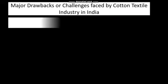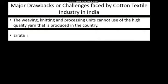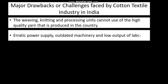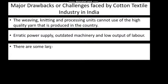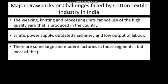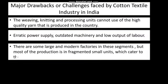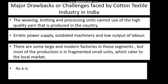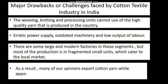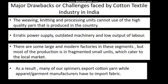In India, the weaving, knitting and processing units cannot use the high quality yarn that is produced in the country because most of this yarn is exported to foreign countries. Erratic power supply and outdated machinery lead to low labour output. There are some large and modern factories, but most production is in fragmented small units catering to local markets. As a result, many spinners export cotton yarn while apparel and garment manufacturers have to import fabric.